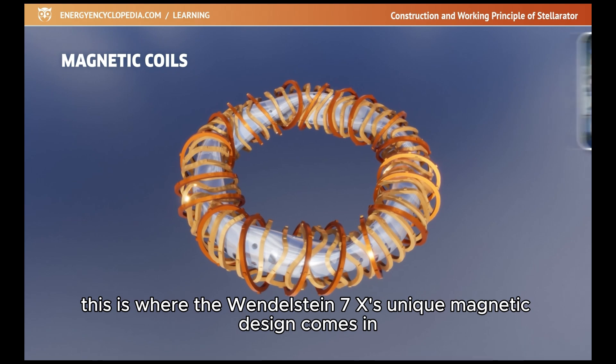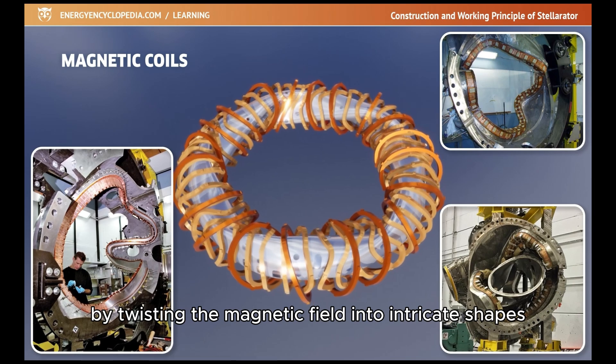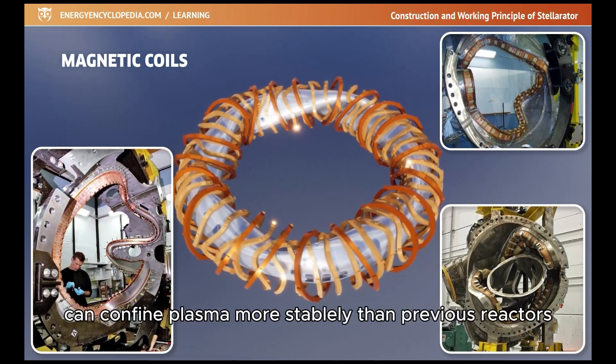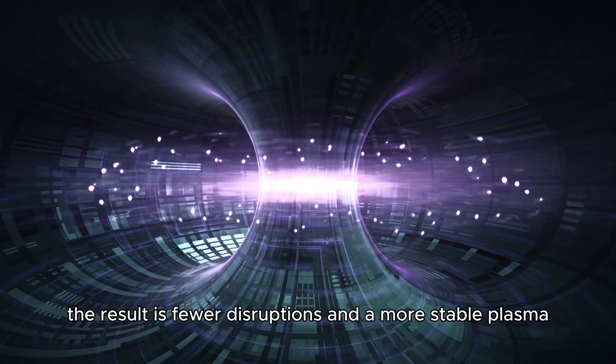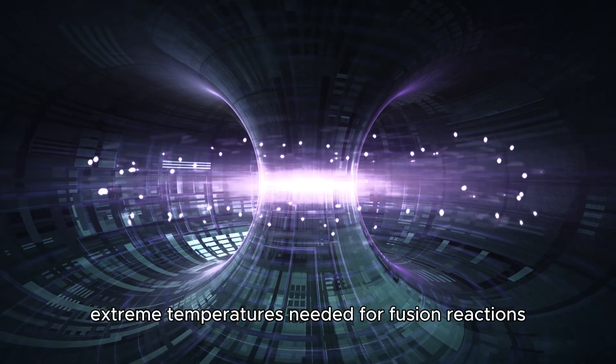This is where the Wendelstein 7X's unique magnetic design comes in. By twisting the magnetic field into intricate shapes, the Wendelstein 7X can confine plasma more stably than previous reactors. The result is fewer disruptions and a more stable plasma, which is crucial for maintaining the extreme temperatures needed for fusion reactions.